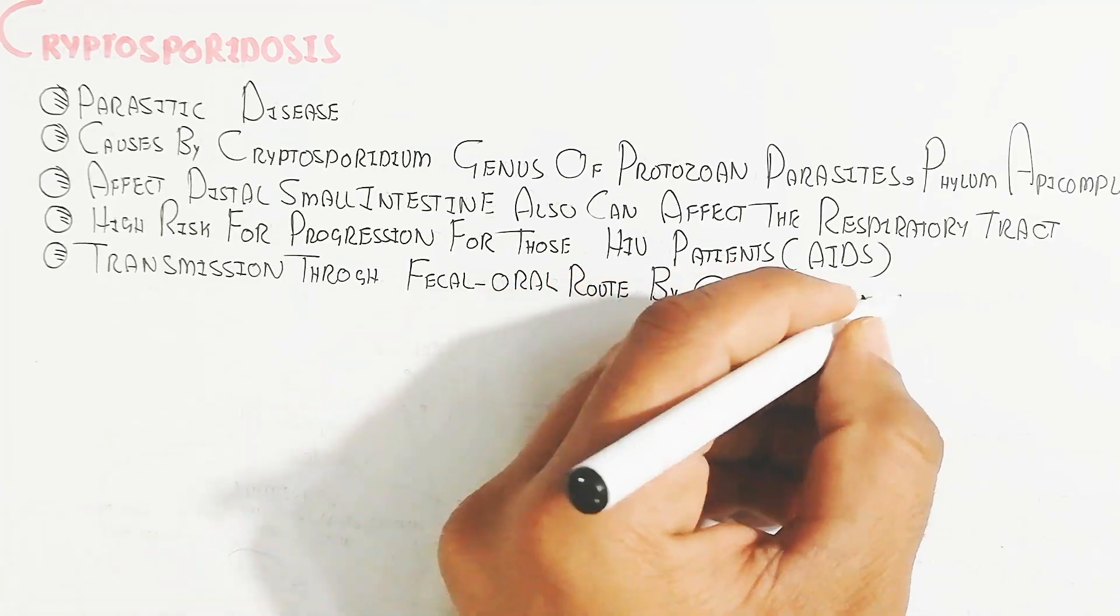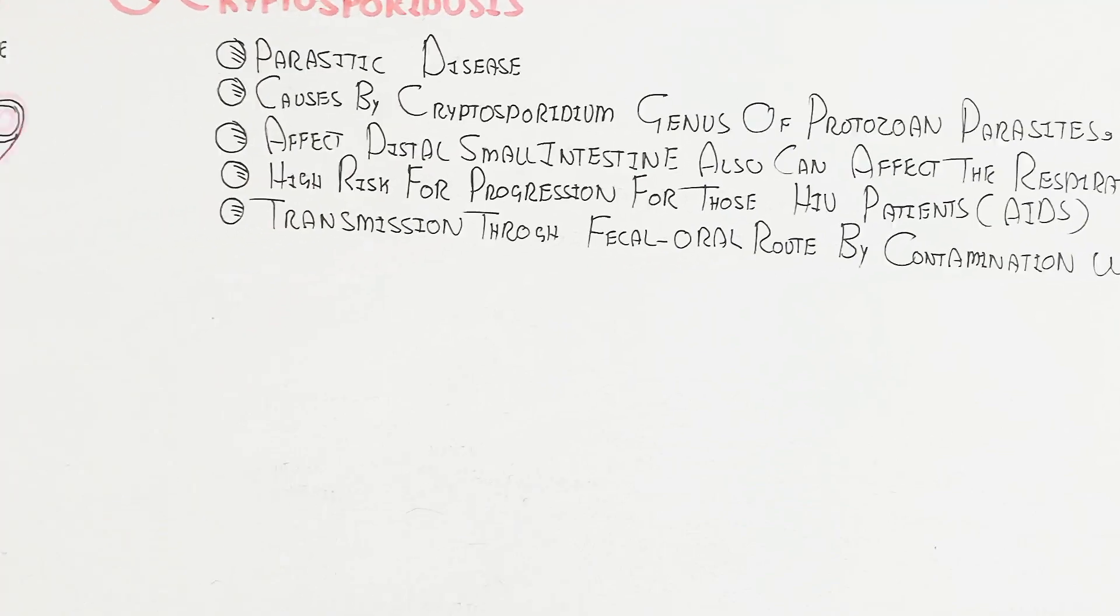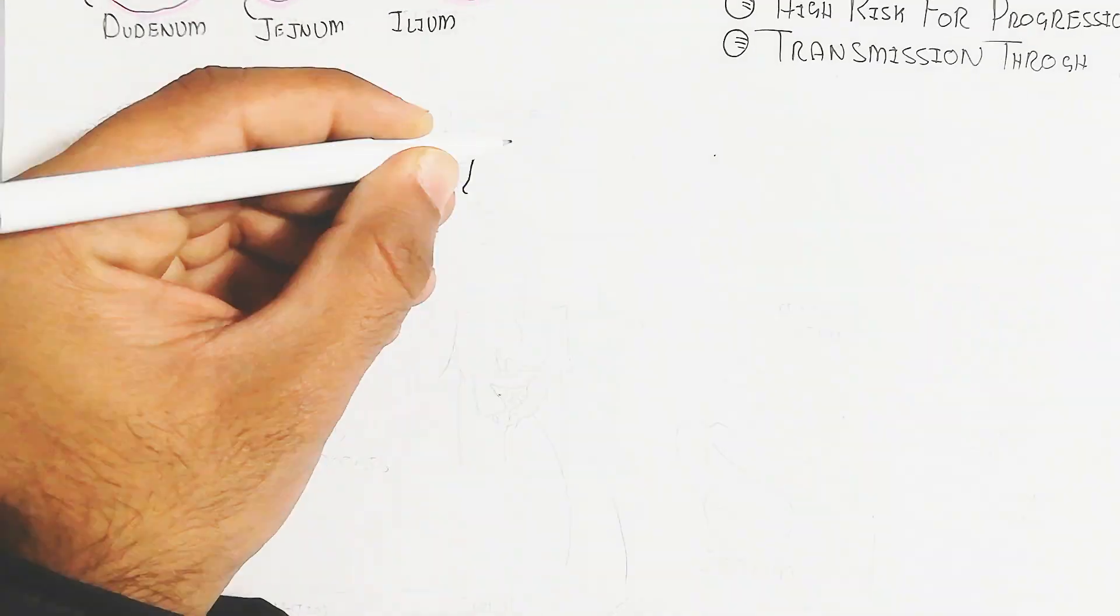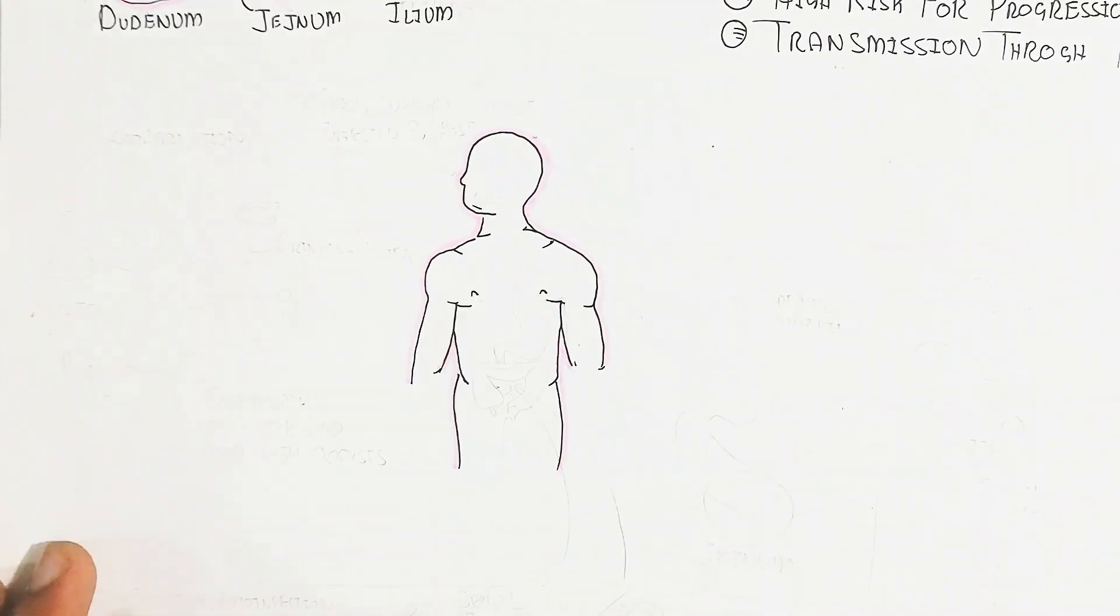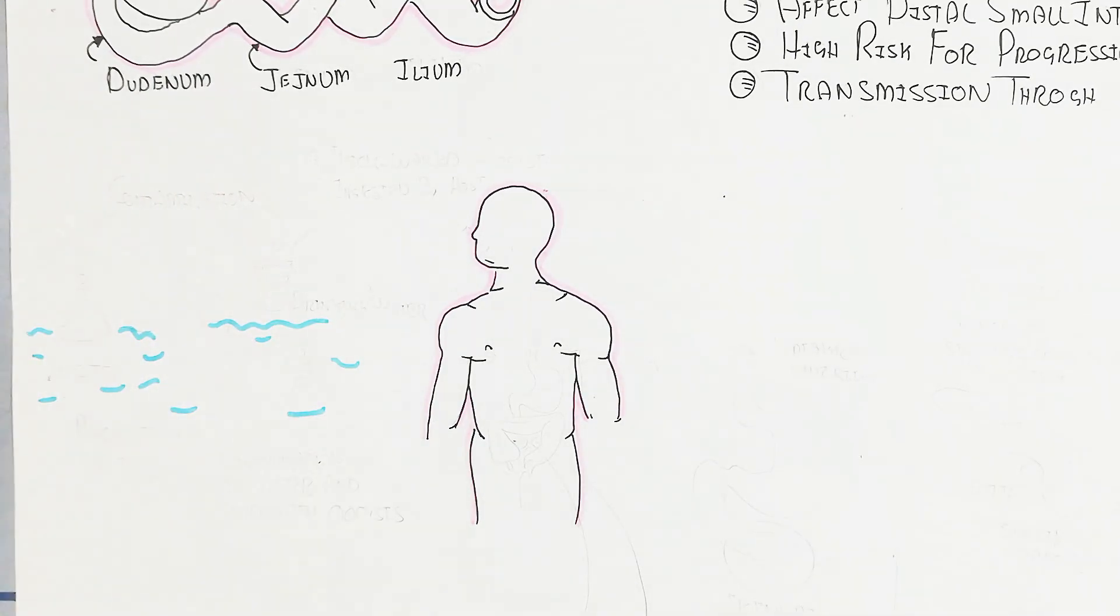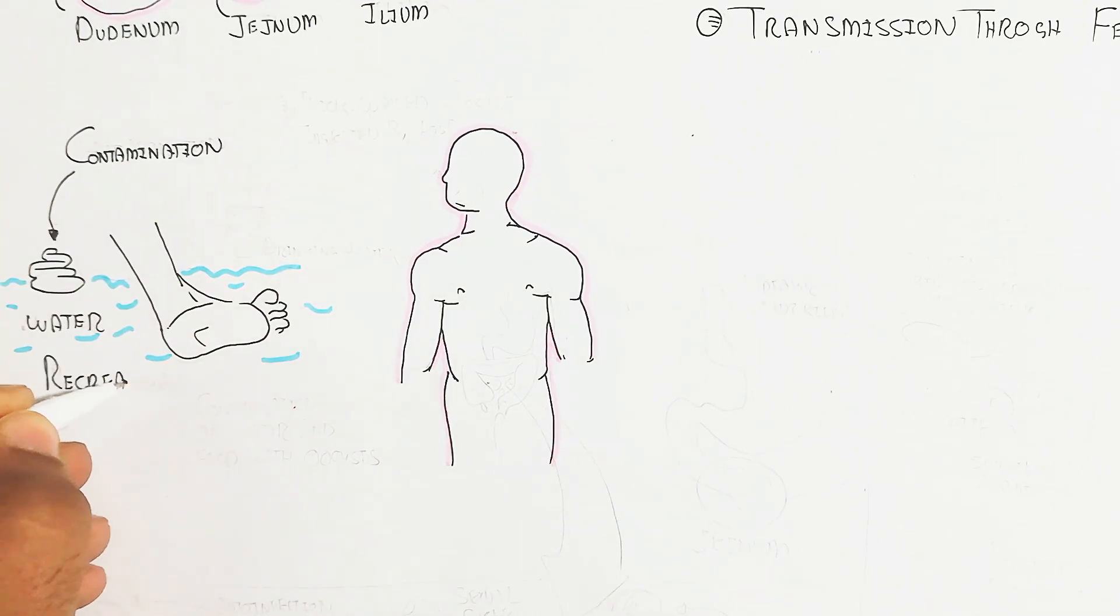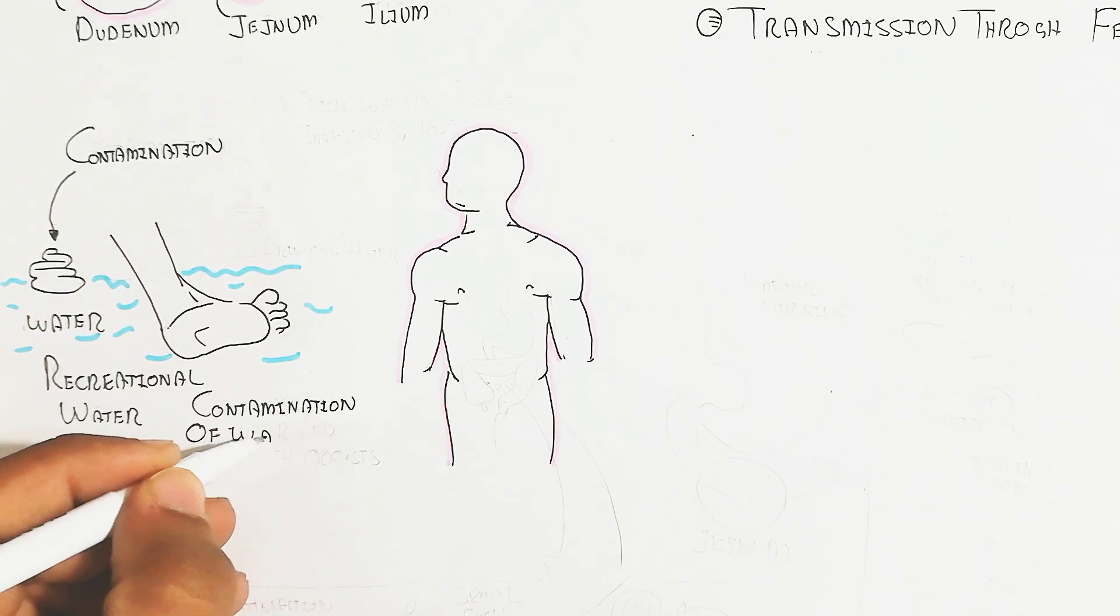Transmission occurs through the fecal-oral route. By contamination, water content will be related to the contamination of the cryptosporidium genus. Recreational water becomes contaminated due to feces entering the water, leading to contamination.